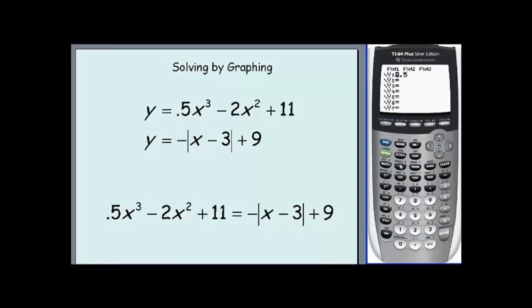We have .5X cubed minus 2X squared plus 11 as our first function. Our second function is negative, so be careful about not forgetting that. Absolute value, which can be found under math, arrow over to num. It's the ABS option. Negative absolute value of X minus 3. I want to close the parentheses there. Plus 9.